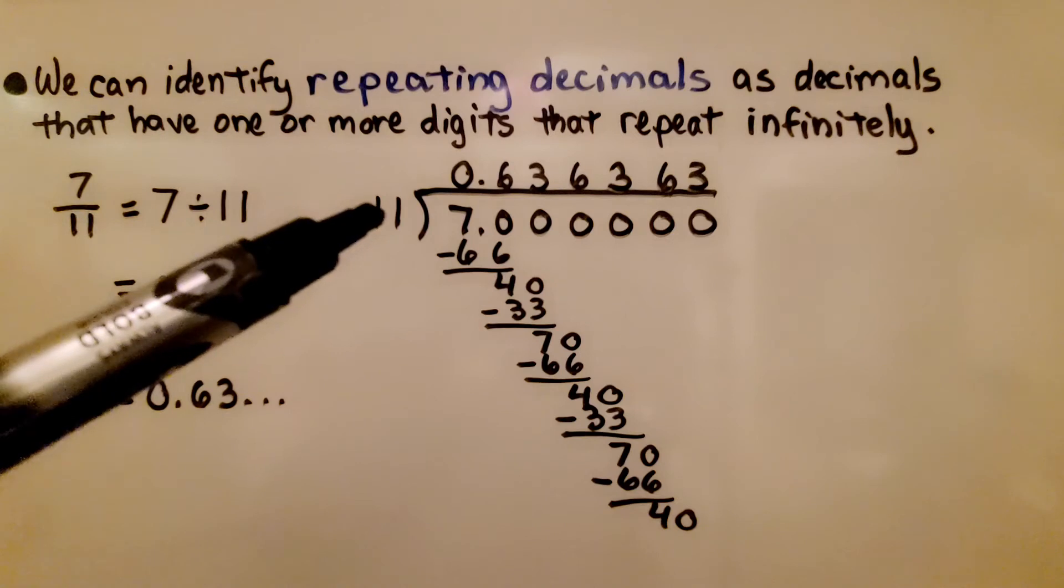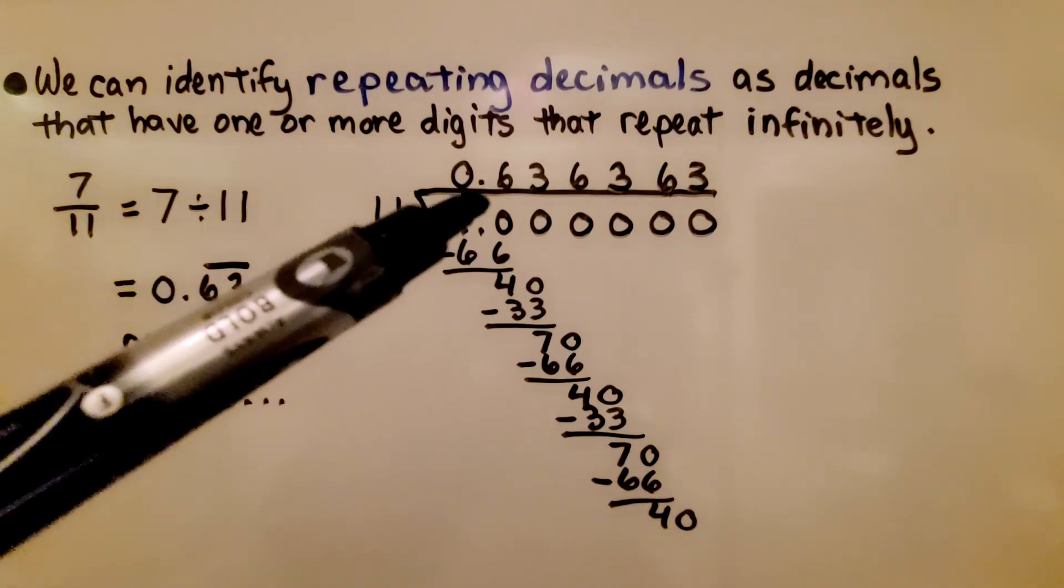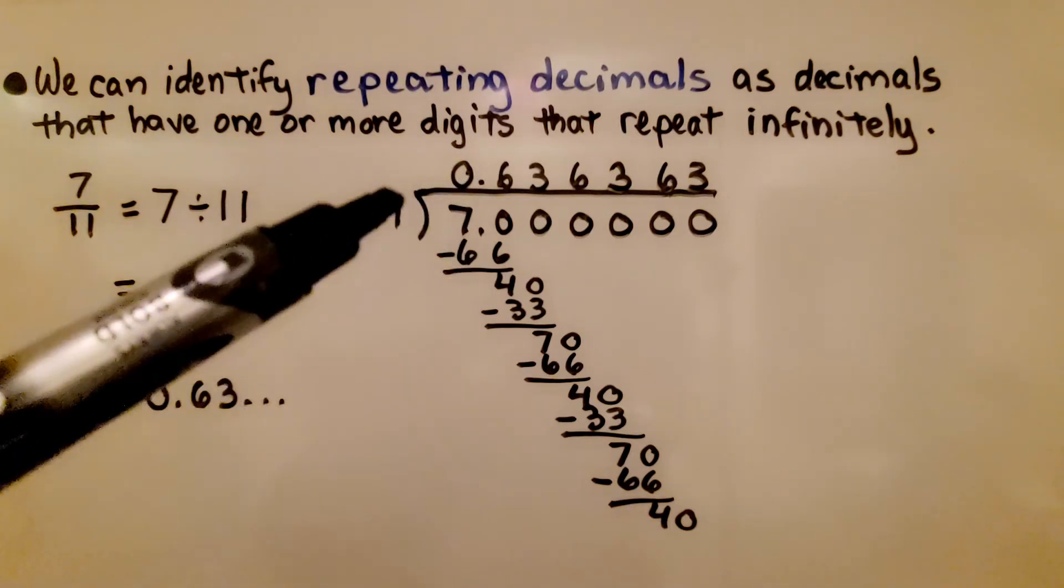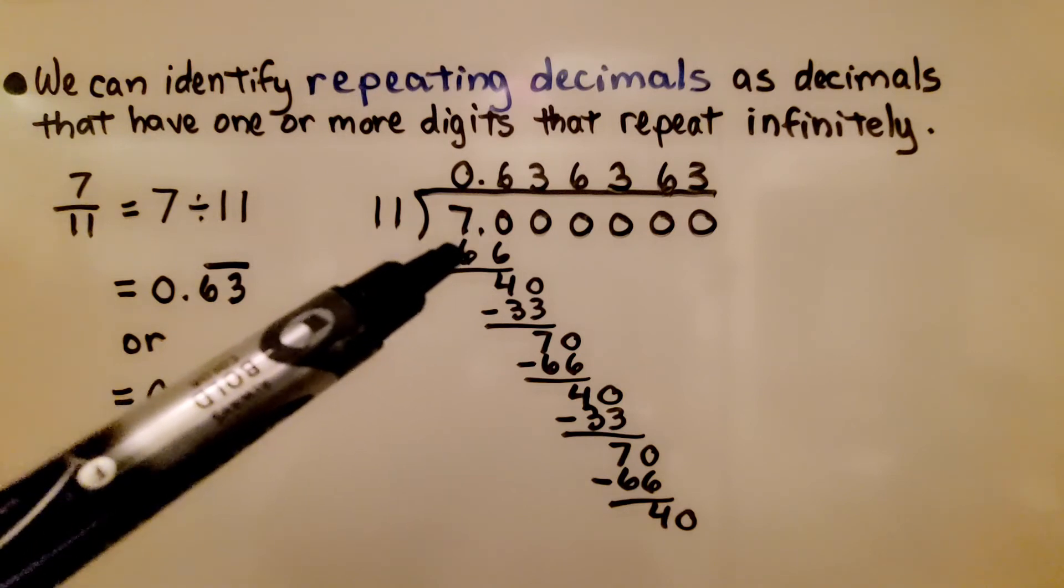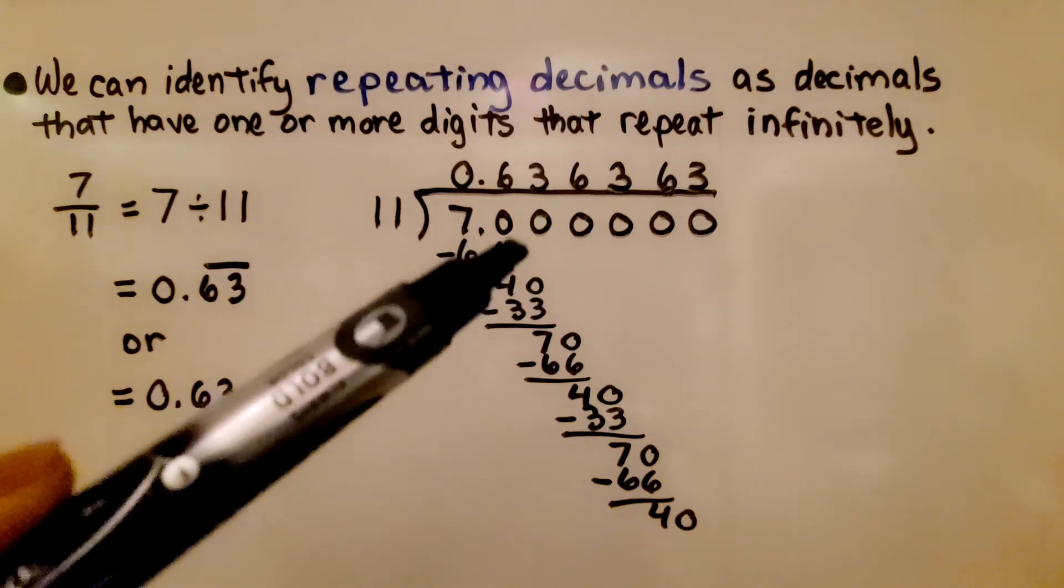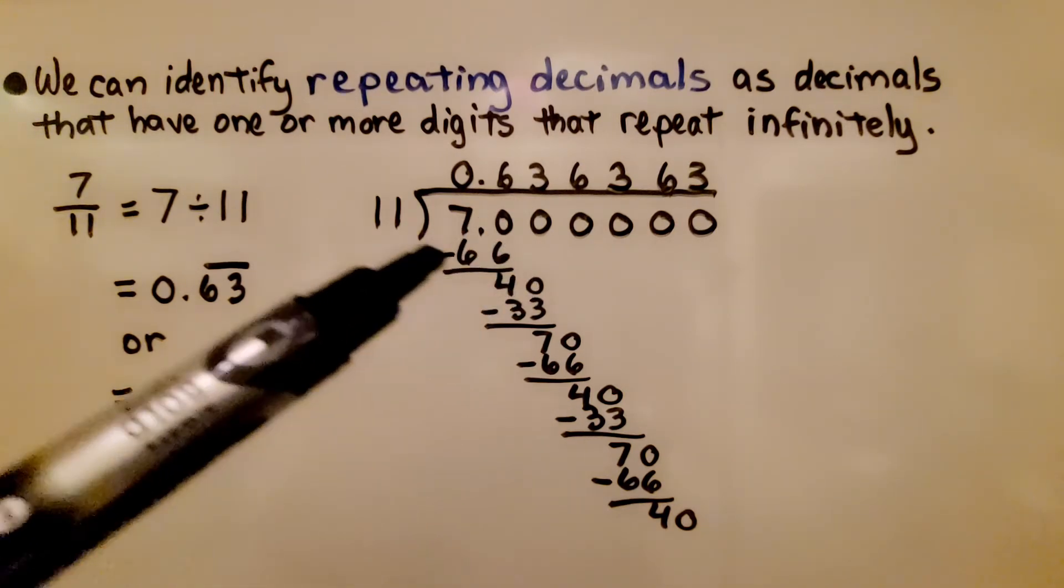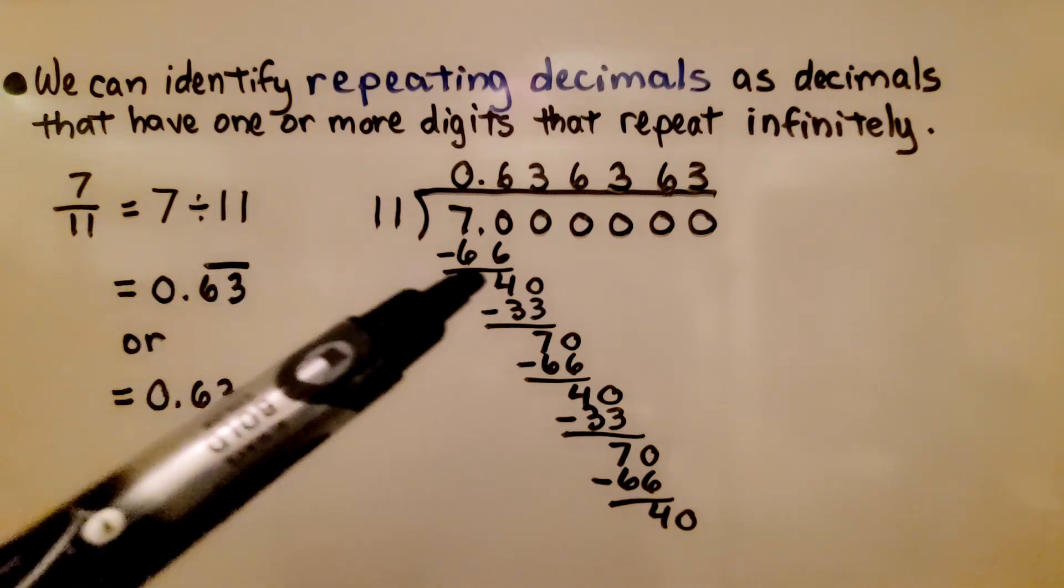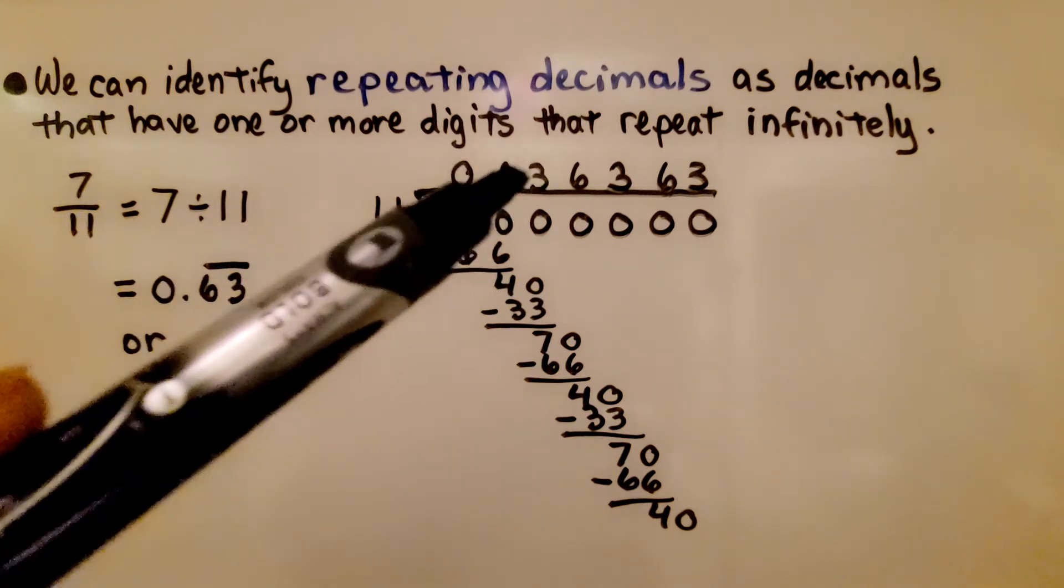We're trying to see how many times 11 can fit into 70. That's 6 times, and 11 times 6 is 66. We subtract and get a 4 and drop this 0 down. Now we're trying to find how many times 11 can fit into 40.